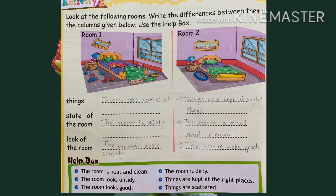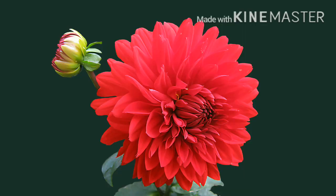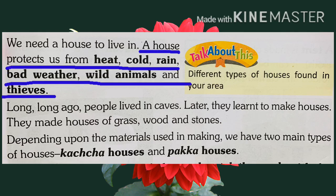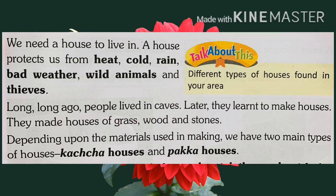तो हमें कैसा room पसंद है — room number 1 या room number 2? Let us understand the lesson line by line. We need a house to live in — हमें रहने के लिए घर की जरूरत पड़ती है. A house protects us from heat, cold, rain, bad weather, wild animals and thieves. घर हमें ठंड, गर्मी, बारिश, bad weather, wild animals और thieves यानी चोर से बचाता है.